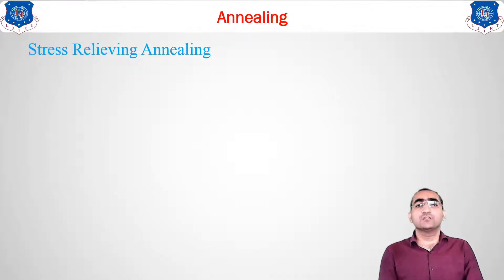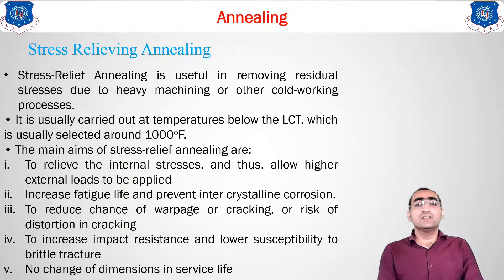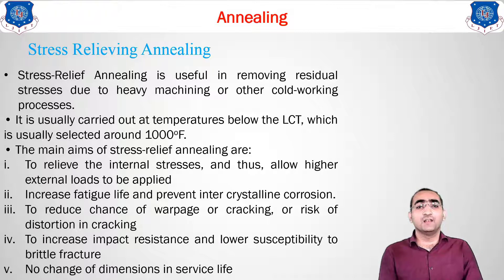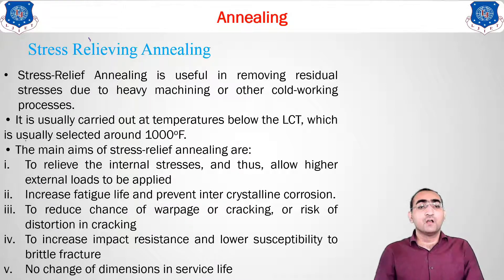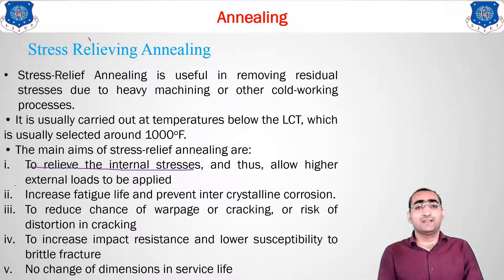The last method of annealing is known as stress relieving annealing. As the name suggests, this type of annealing is used to remove the stresses which are developed inside the material. For the cold work process, whichever material you are going for metal forming, you will be using stress relieving annealing. It is carried out below the lower critical temperature, which is at about 1000 degrees Fahrenheit. The main aim is to relieve the internal stresses and allow the material to be highly capable of absorbing load — it can absorb much more load because we are removing the stresses.